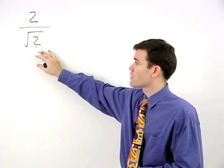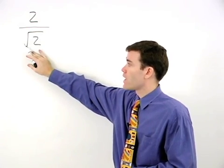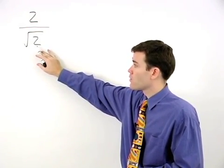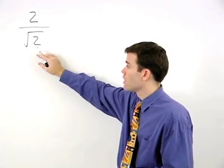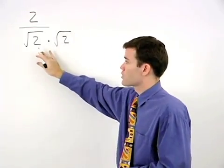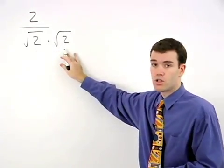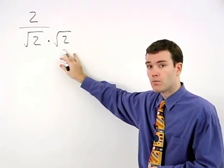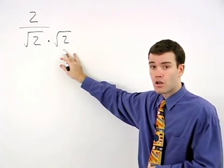So here our first step is to get rid of the radical in the denominator by multiplying the square root of 2 in the denominator by itself. Because the square root of 2 times the square root of 2 is the square root of 4 which equals 2. So the radical is gone.